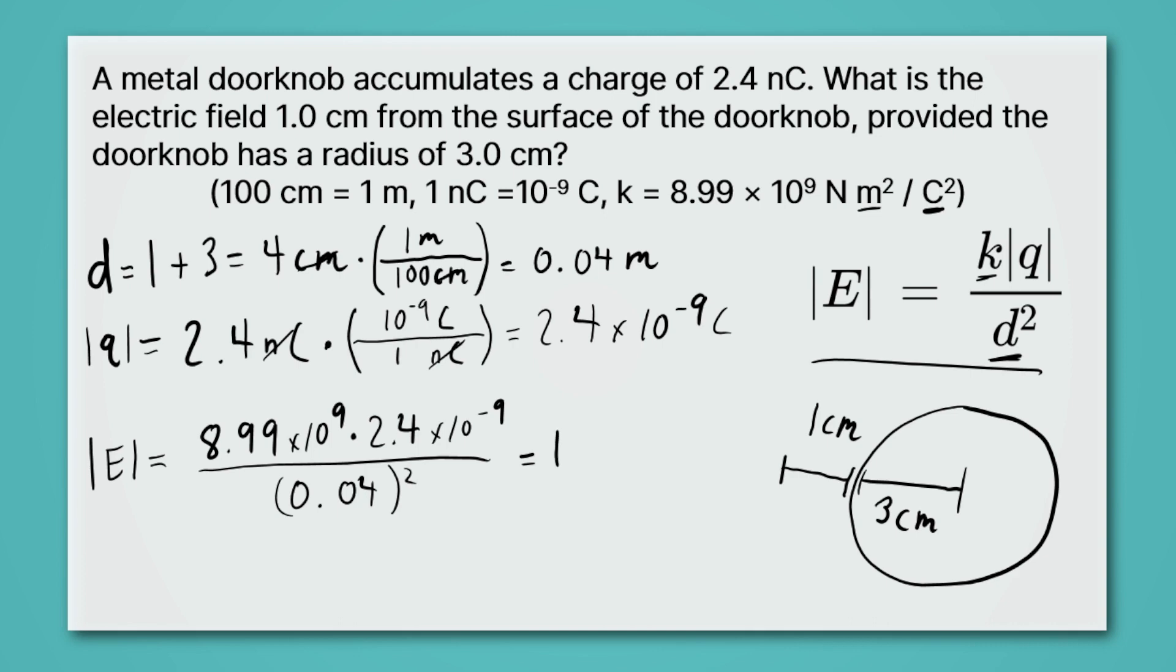That's going to give me 13,485. And because my distances both have two sig figs, and so does my charge, I'm going to round to just two sig figs. And that's going to give me 13,000 newtons per coulomb. And that's the strength of the electric field.